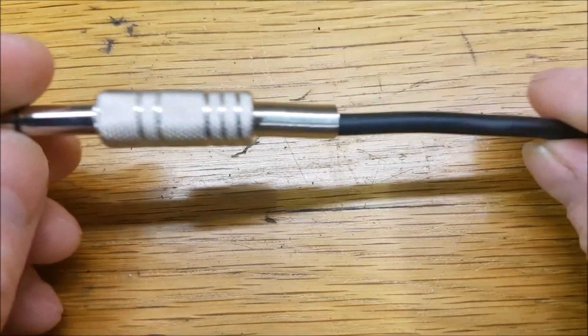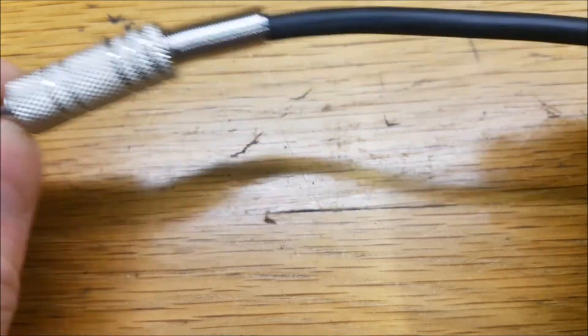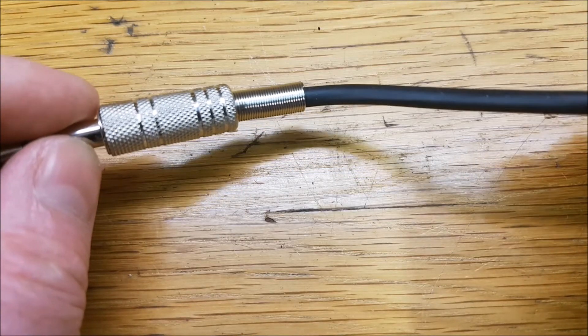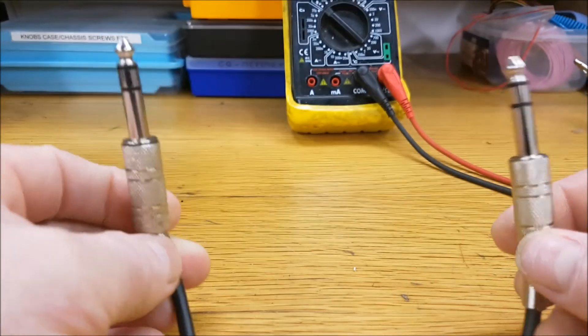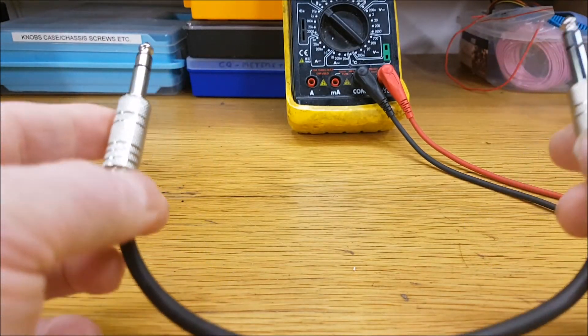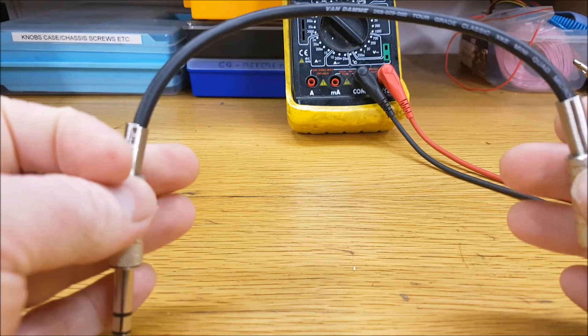So the other end then is just a repetition of that, so I won't bother showing you that. Quarter-inch tip, ring, sleeve on each end—balanced audio lead with decent cable.